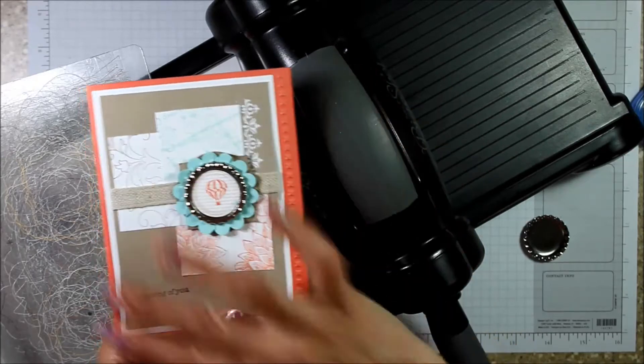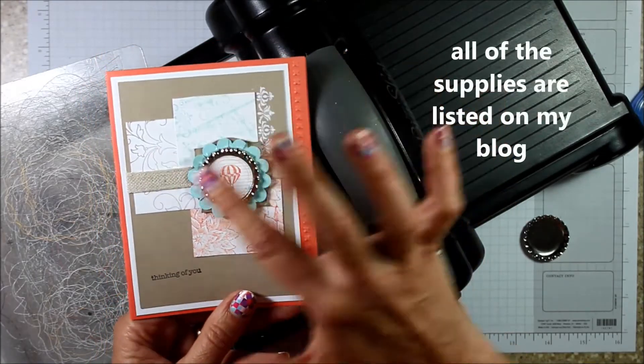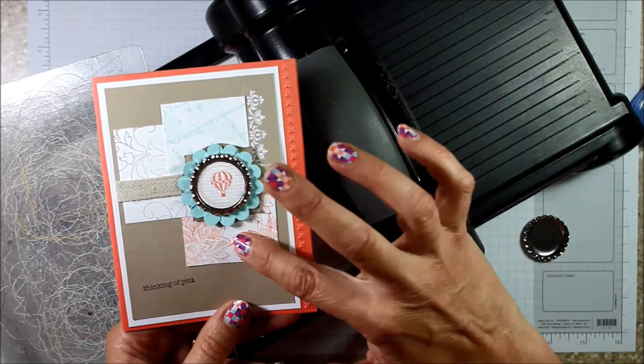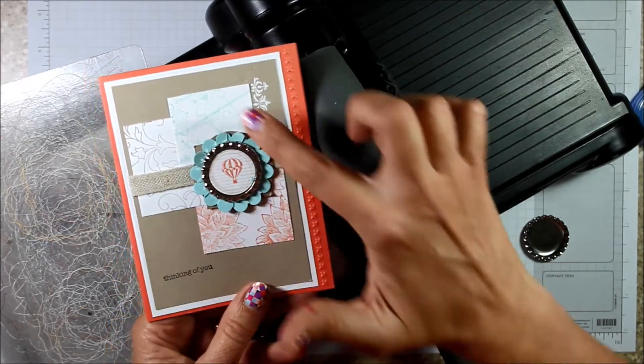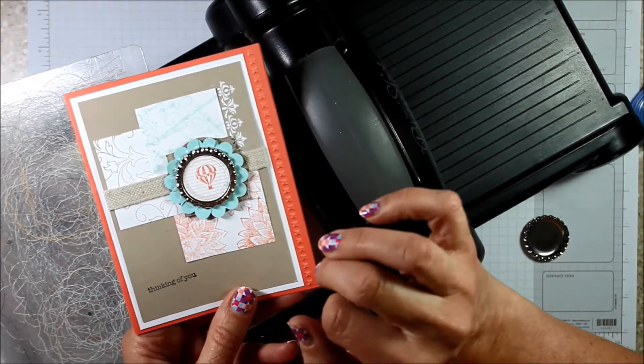And we use the stamp set for most of this card called Creative Elements. I've used some Pool Party, some Crumb Cake, and Calypso Coral. And Stampin' Up has just announced that they're going to bring these two colors back into our main color schemes. I'm really excited about that.